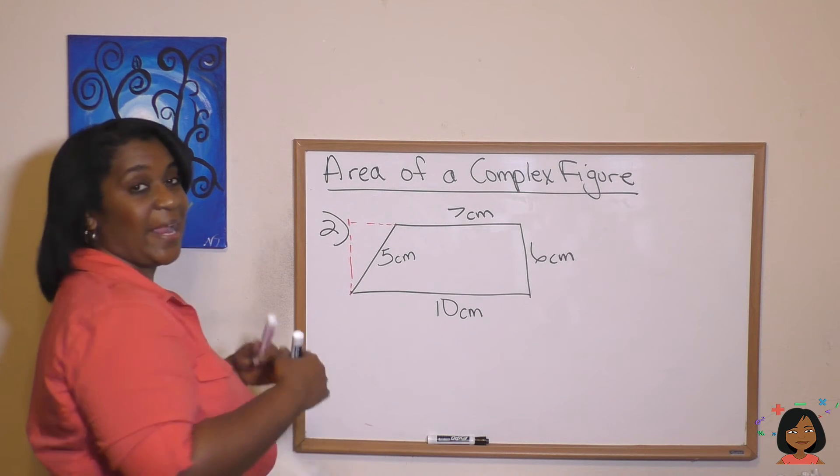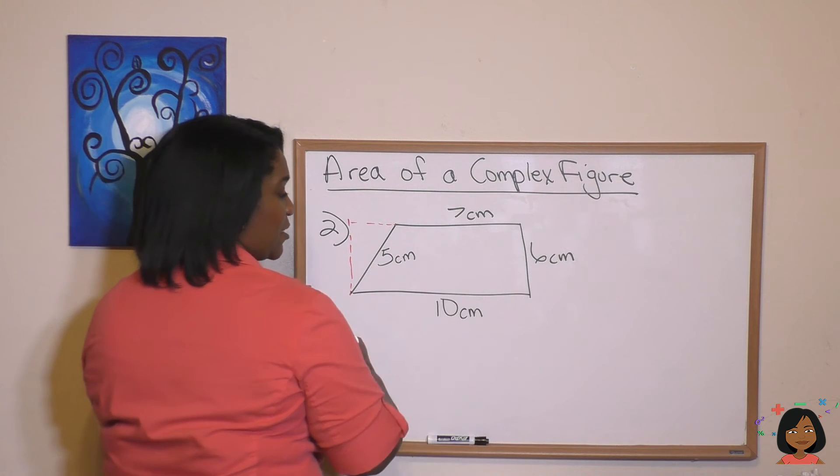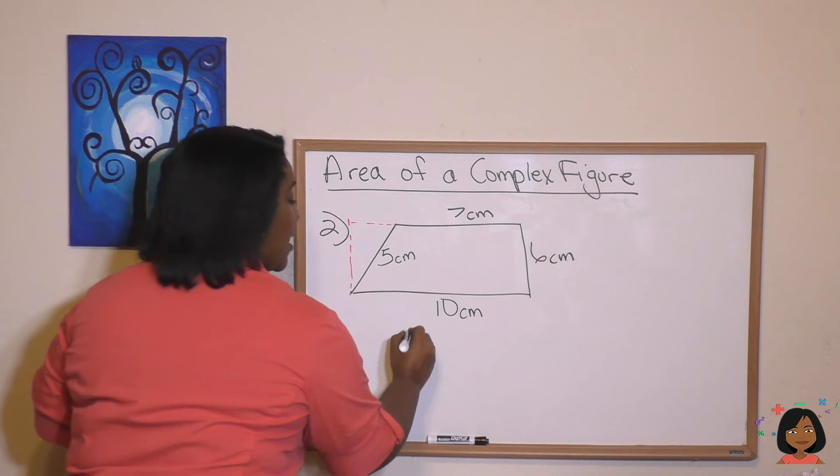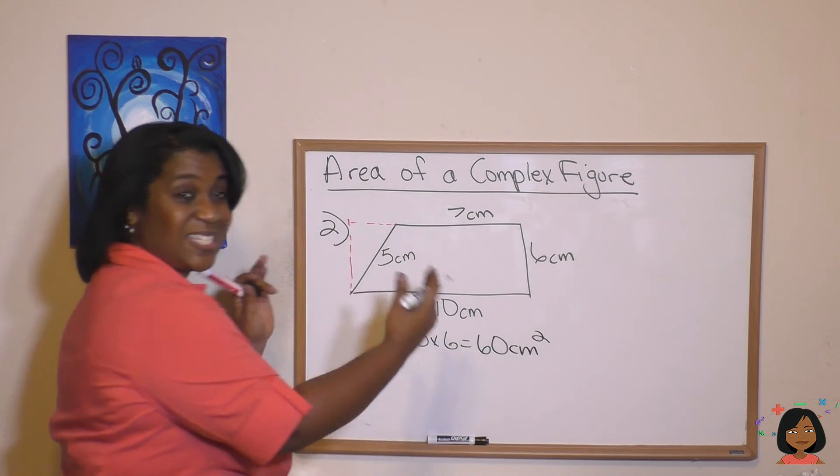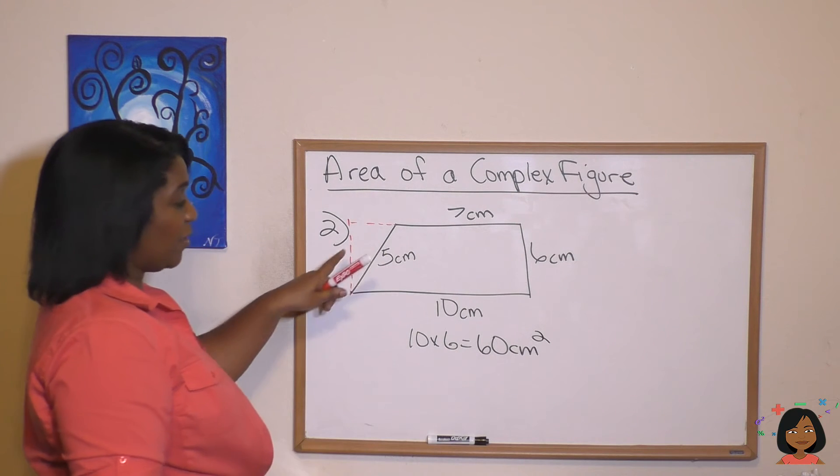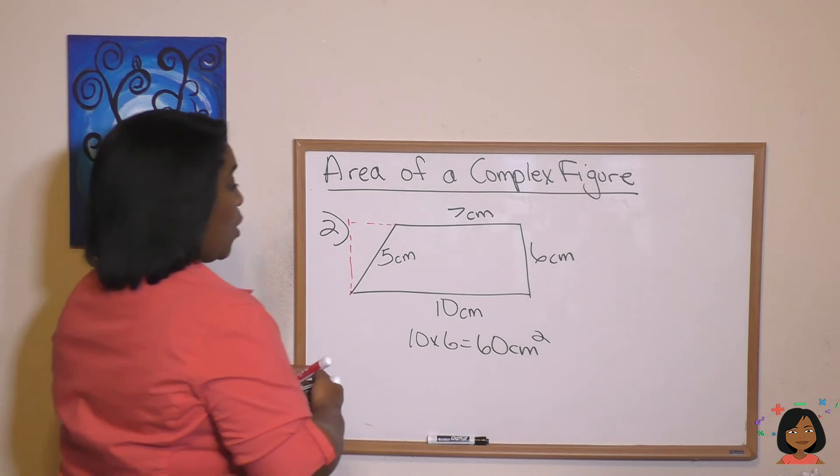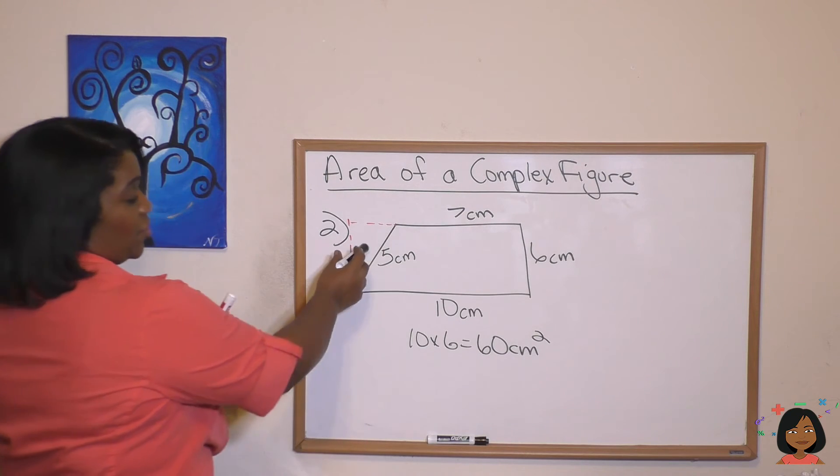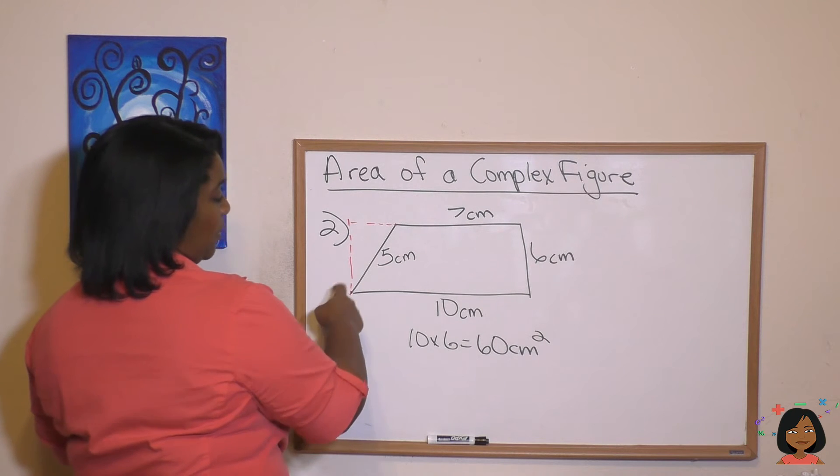The entire area of the rectangle is going to be 10 length times 6. So 10 times 6 equals 60 centimeters squared. That's the entire rectangle. But we want to figure out how much this triangle is and then subtract it out. Well, we know that the triangle is going to be one half base times height. Well, let's figure out the pieces.